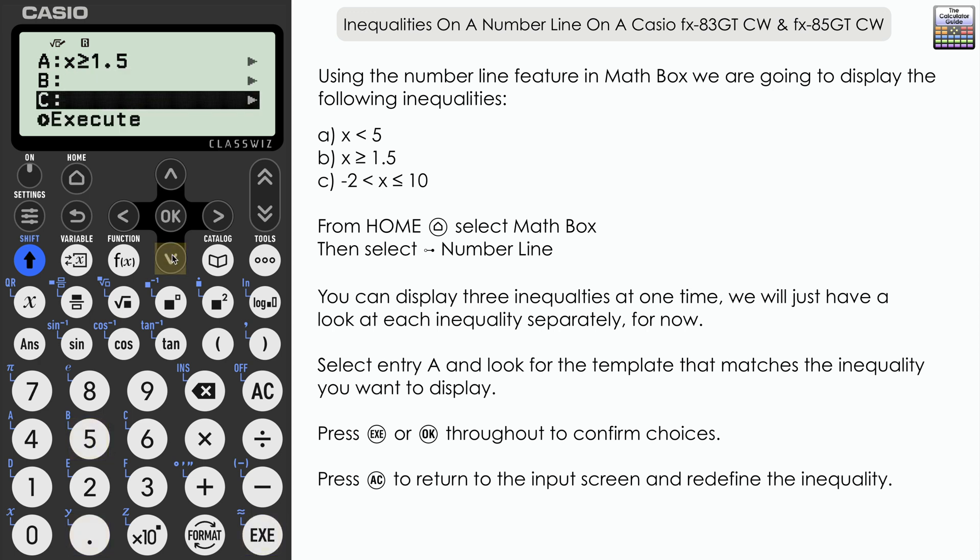So scroll down to execute and here we have a number line. So 1.5 and greater, and you can see the filled in circle that indicates that we can include the value of 1.5. Let's press AC and go back and do a third and final one.